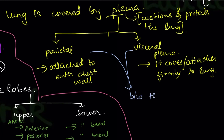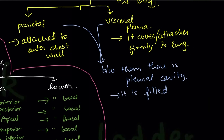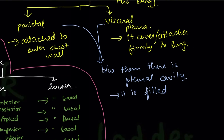Between the parietal pleura and visceral pleura is the pleural cavity, which is filled with pleural fluid. This pleural fluid contains some WBCs and other blood components, but it is transparent.